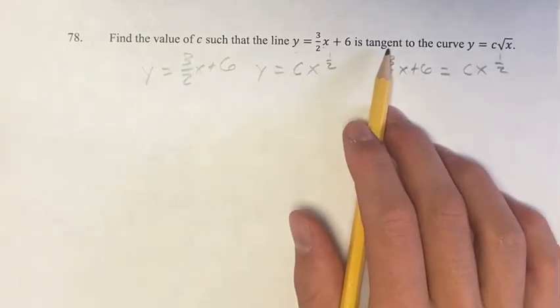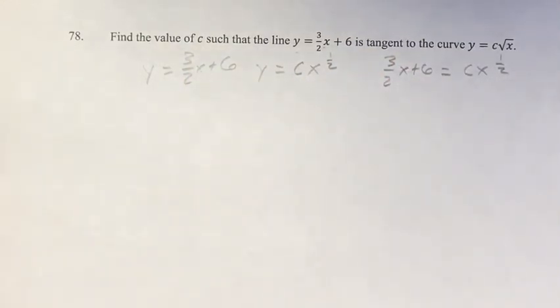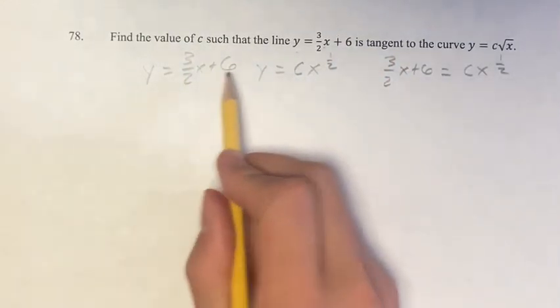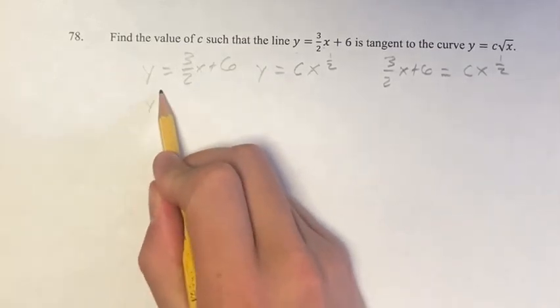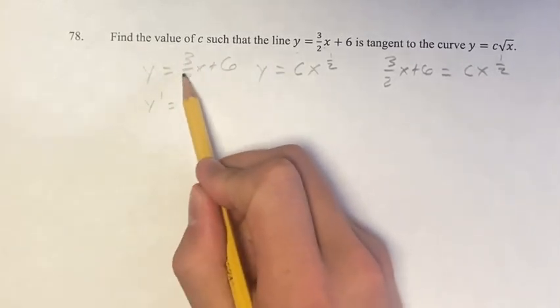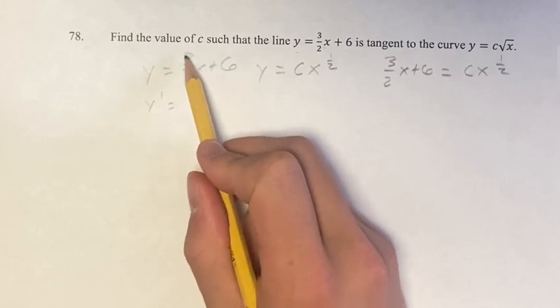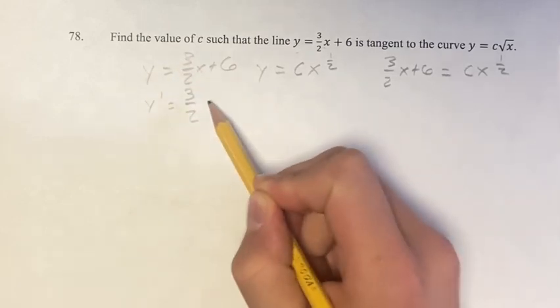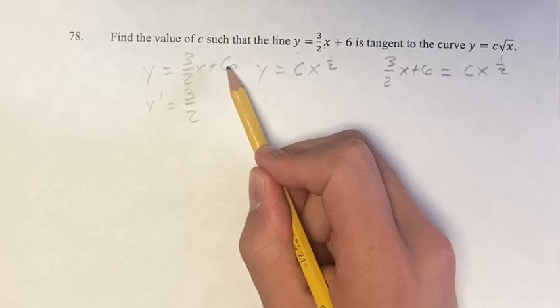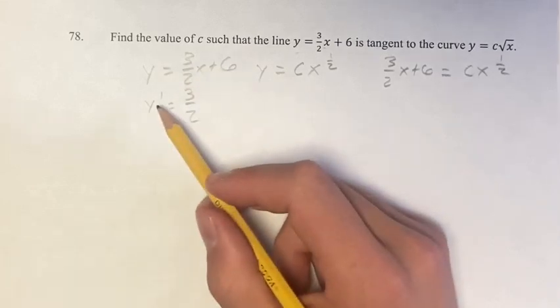Since it's tangent to the curve, we know that not only are they touching at this point, but they have the same slopes. So we find the derivatives. The derivative of this, for the x term, is just the coefficient. Plus the derivative of the constant is 0, so 3 halves.